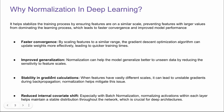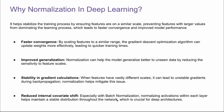Normalization can help the model generalize better to unseen data by reducing the sensitivity to feature scales. The third one is stability in gradient calculations. When features have vastly different scales, it can lead to very unstable gradients in back propagation. Normalization can help mitigate this issue, whether it's vanishing or exploding gradients. The fourth one is reducing the internal covariate shift, which is especially true for batch normalization. Normalizing activations within each layer helps to maintain a stable distribution throughout the network, which is very crucial for deep architectures.